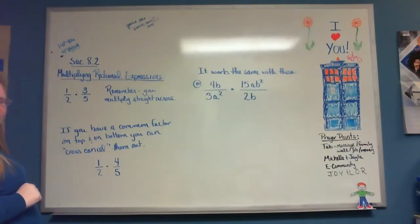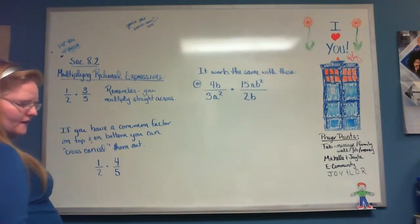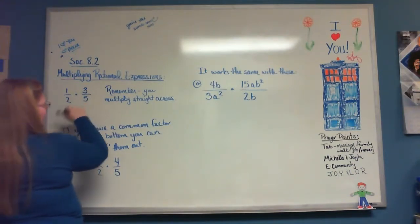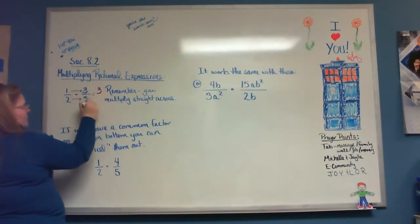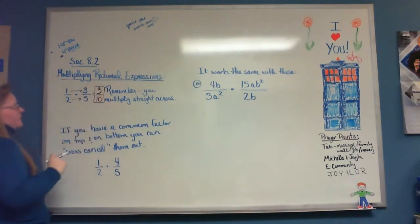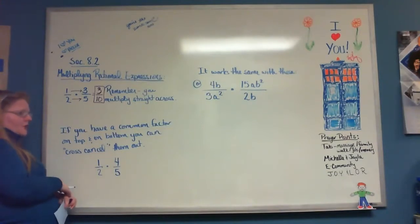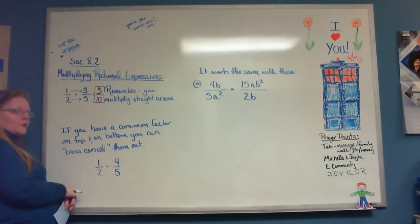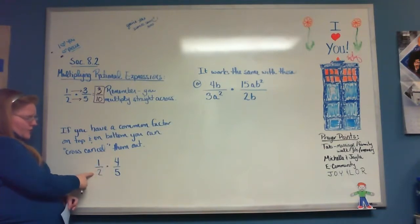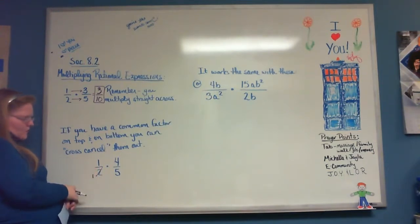For this one, remember you're supposed to multiply straight across: 1 times 3 is 3, and 2 times 5 is 10, so you'd end up with 3 over 10. Another rule to remember is that if there's a common factor on top and on bottom, you can cross-cancel them out. We do have a common factor because 2 goes into 4 and 2 goes into 2.